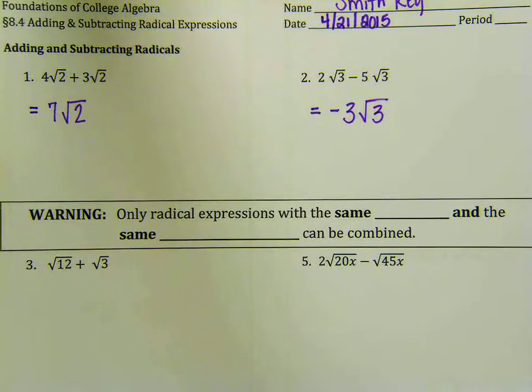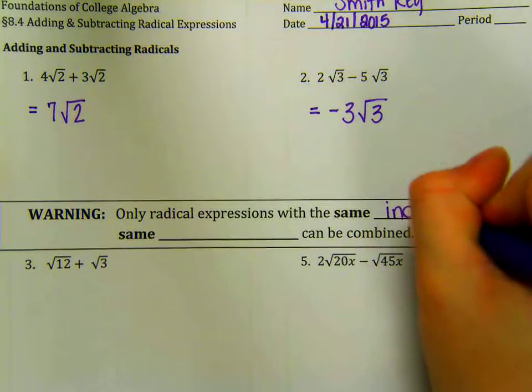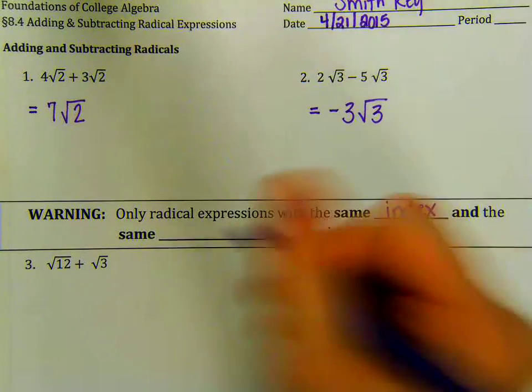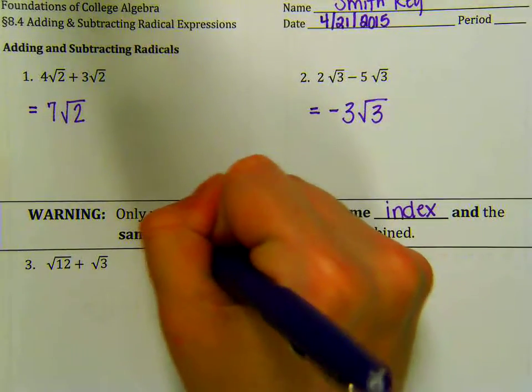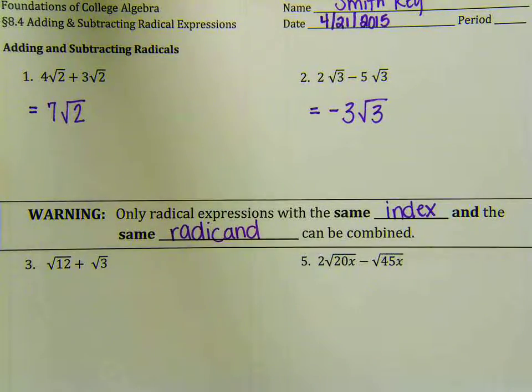This big warning is extremely important. Only radical expressions with the same index and the same radicand can be combined. If they are not the same index and radicand, you're going to have to do something else to it before you're able to simplify it.